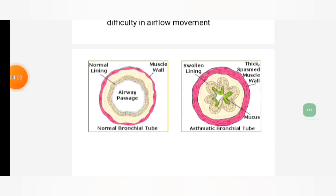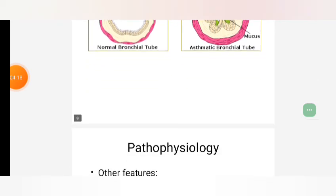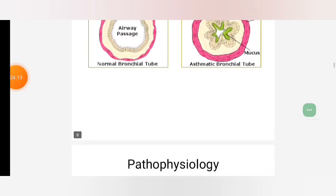We can see in the diagram of our normal air passage compared to the asthmatic bronchial tube — how our lining appears and the spasmed muscle wall visible in the asthmatic airway.